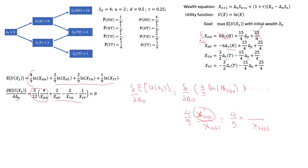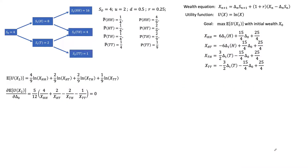When we take the partial derivative of the wealth term with respect to delta_0, we're left with 15/4. So we get (4/9) times (15/4) divided by X(HH). Simplifying: 15 is 3 times 5, and 9 is 3 times 3, so the 3s cancel, giving 12 in the denominator. We're left with 5/12 divided by X(HH) for that term — this is just basic algebra, nothing mysterious.